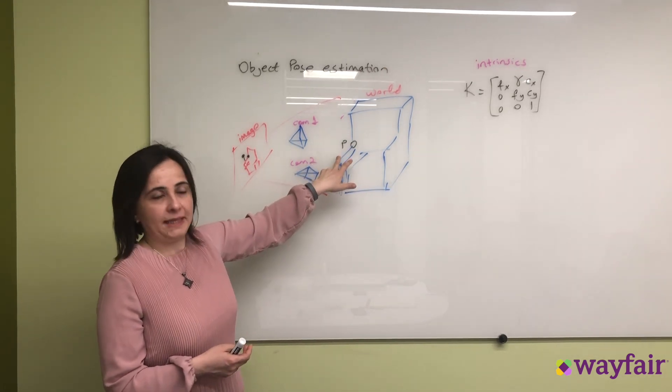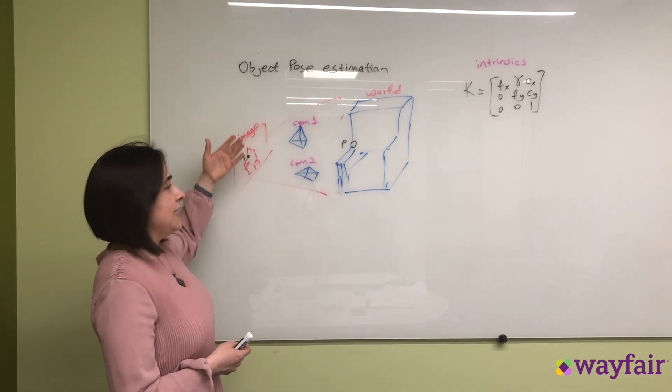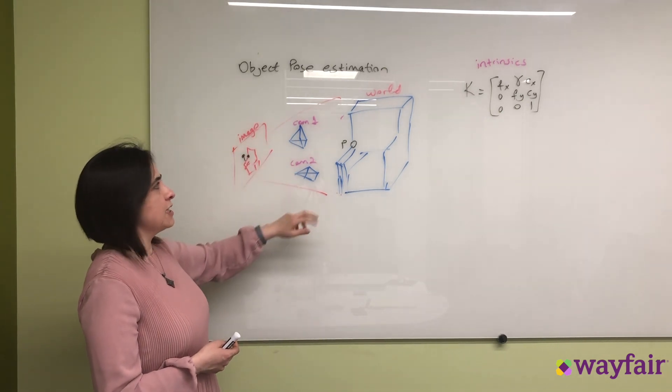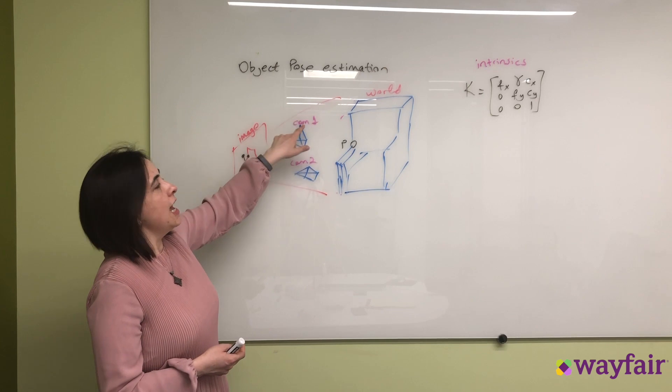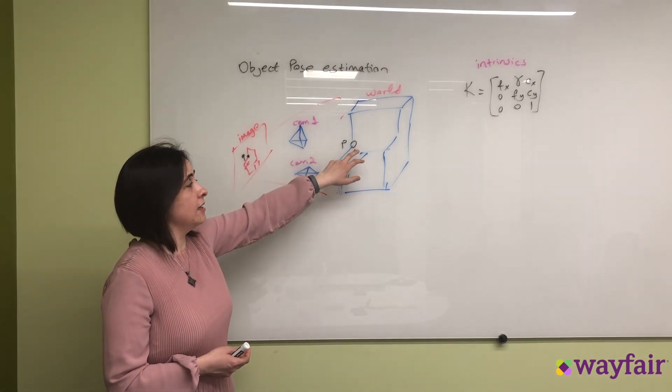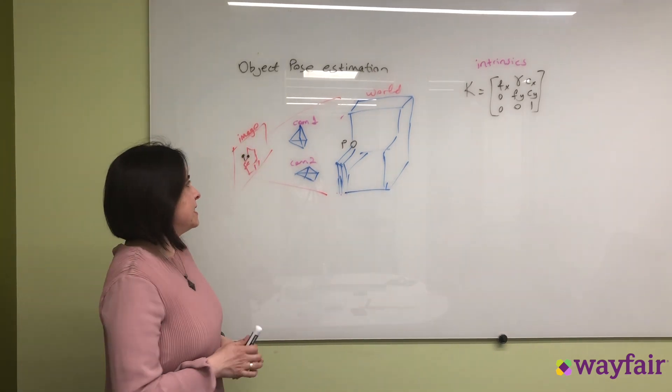Let's say we have a point P and this point is projected into the pixel coordinate system by using the camera intrinsic matrix. Basically we are taking this P and based on the image from camera 1, we can relate point P to point Q in the pixel coordinate system.